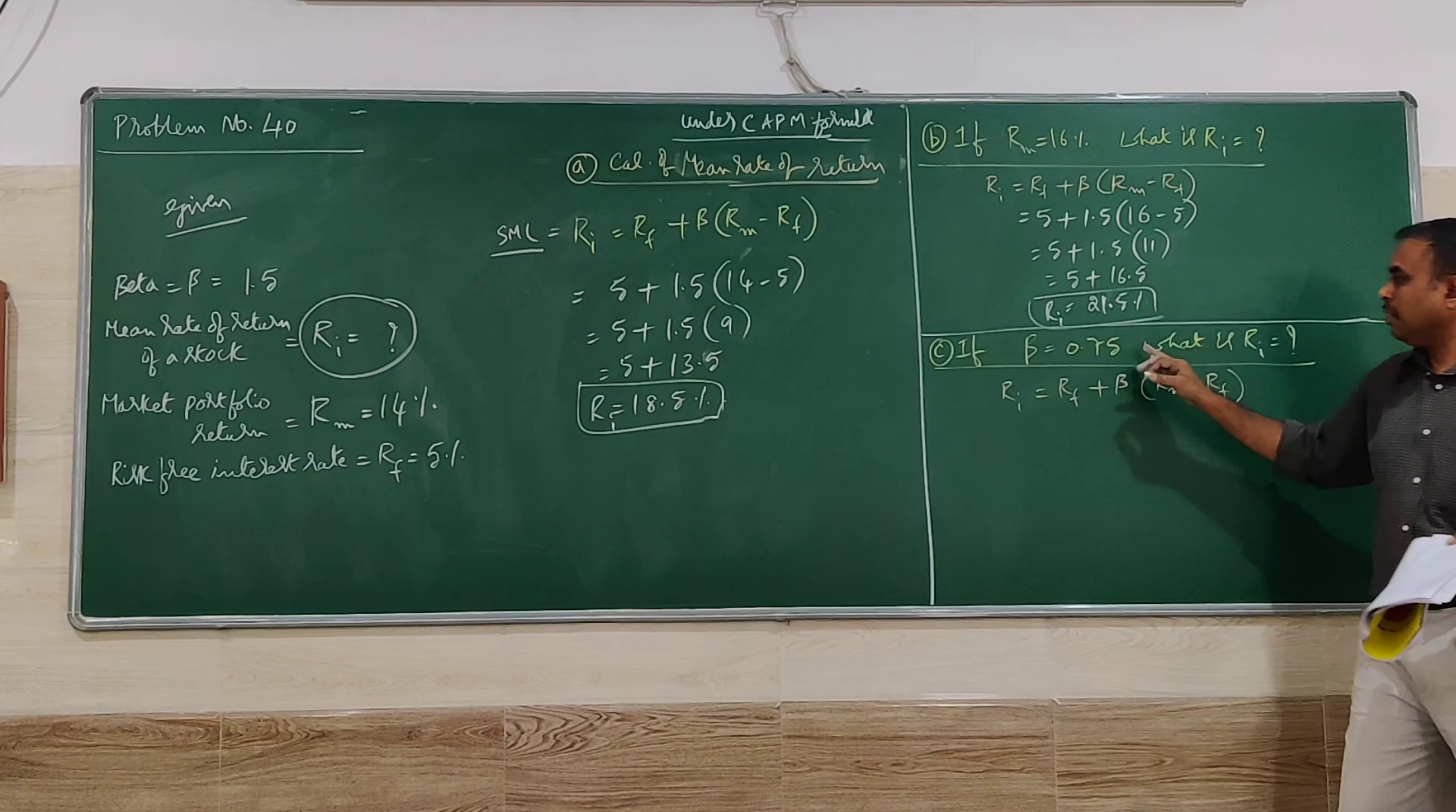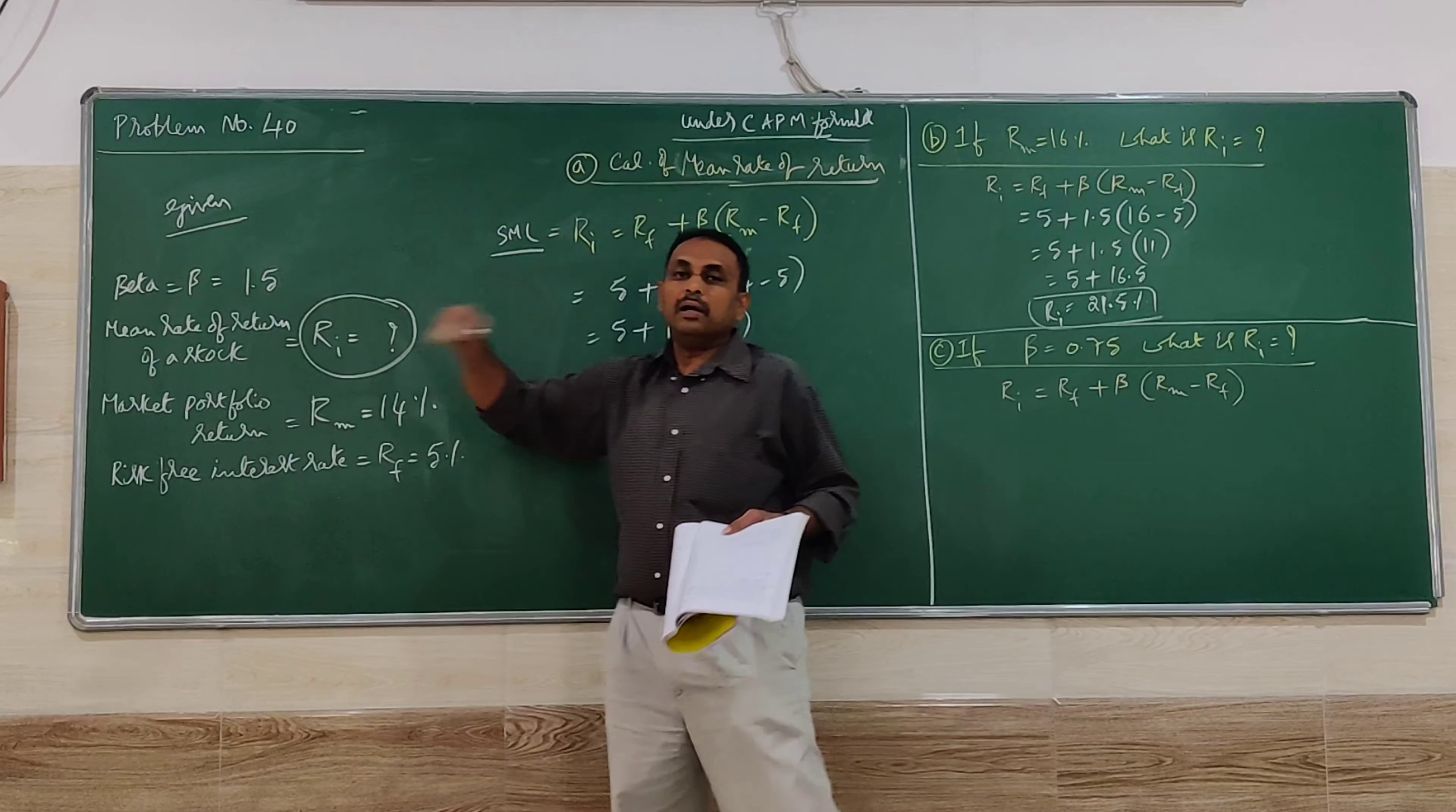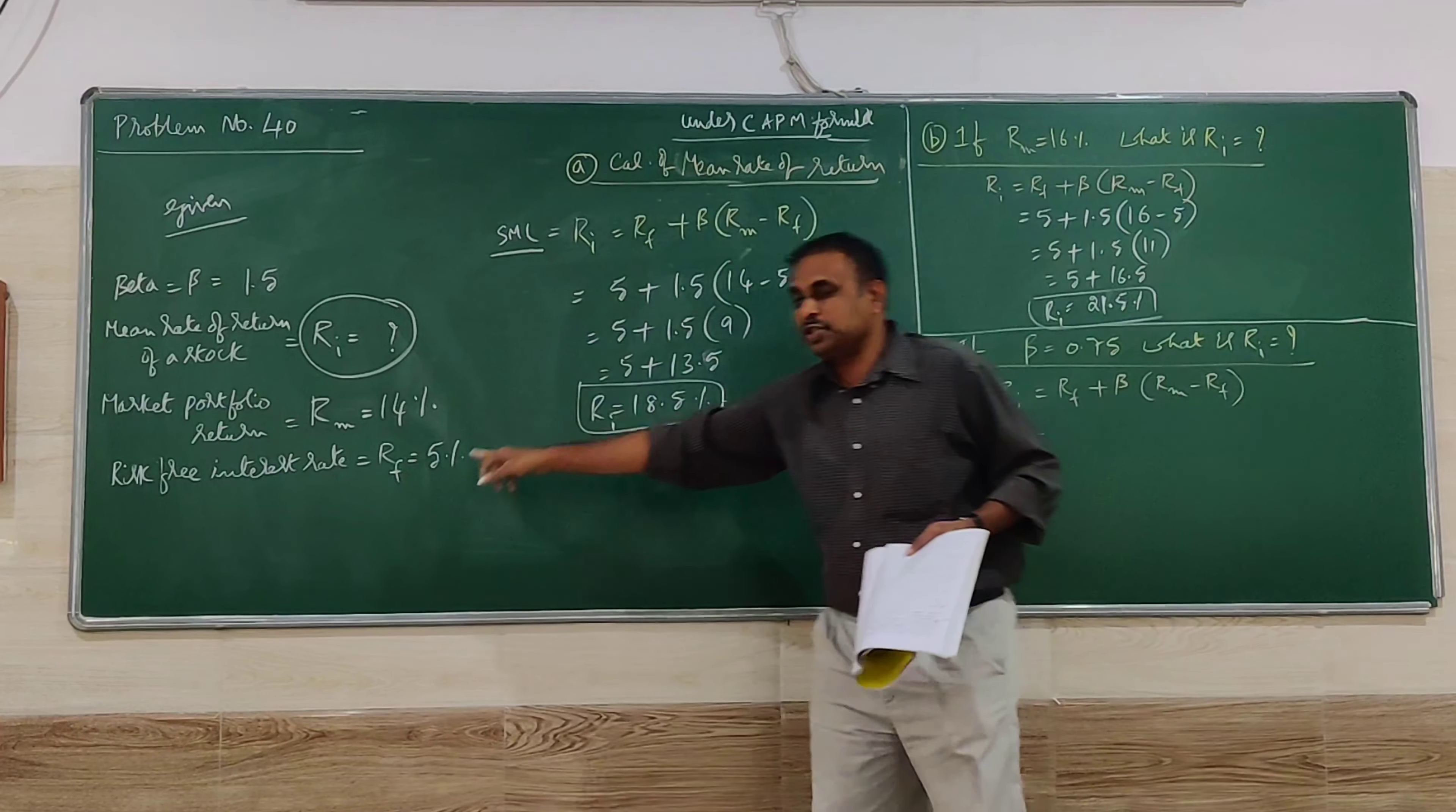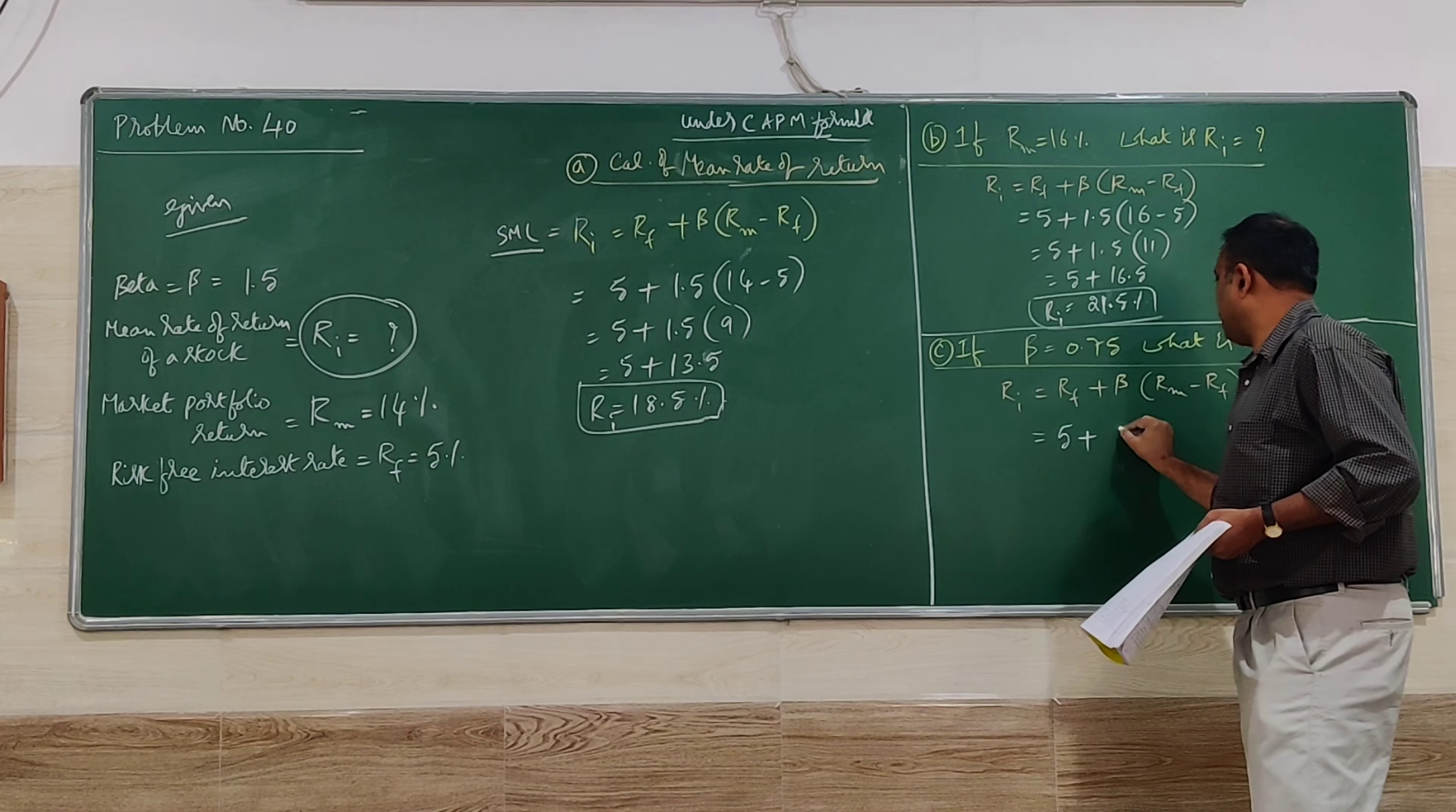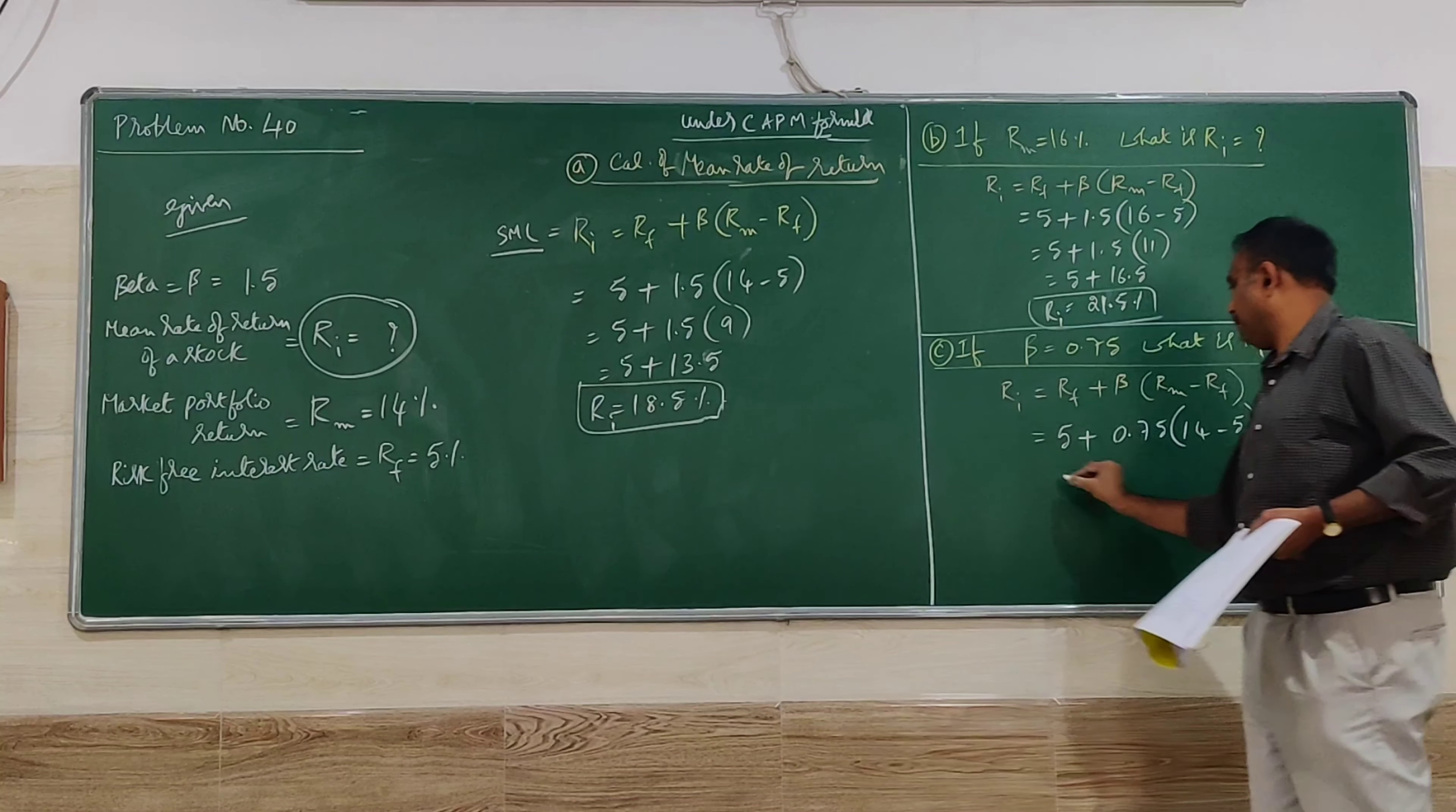Coming to the next question: If beta is 0.75 (half of the original 1.5), what is RI? Let me use the original RF and RM values. RF is 5%, beta is 0.75, RM is the old value of 14%.